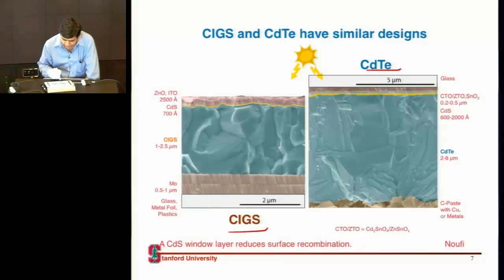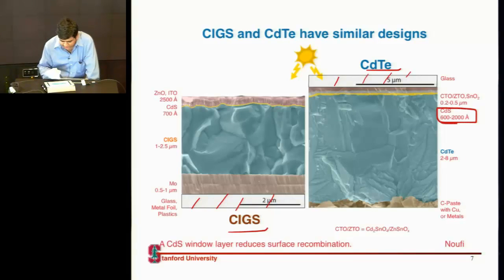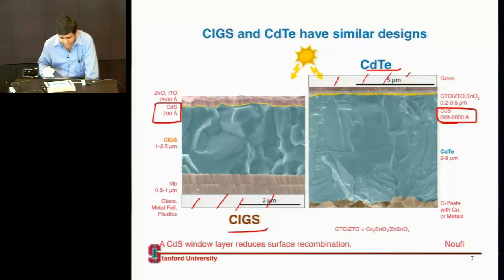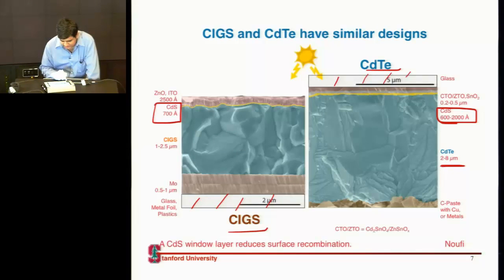Both of them could be grown on glass or on aluminum foil. They have a cadmium sulfide window layer, which acts as a selective contact. In one case the absorber is cadmium telluride; in another case the absorber is CIGS.